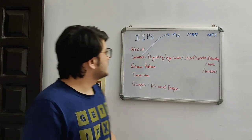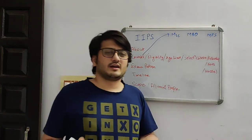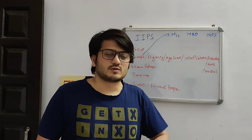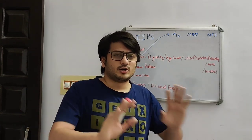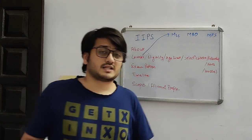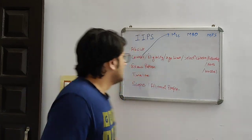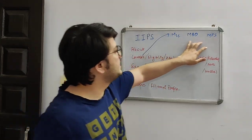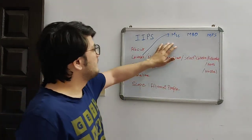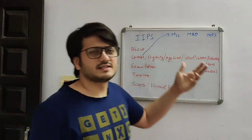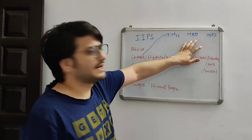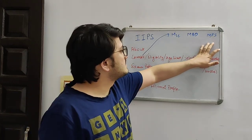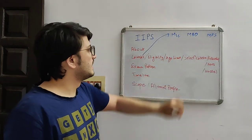At IIPS, there are 6 courses at the postgraduate level — 3 are Master's degree courses and 3 are PhD and doctoral programs. We are going to talk about the Master's degree programs. There are 3 courses: MSc, MBD, and MPS. MSc is Master of Science in Population Studies. MBD is Biostatistics and Demography. And MPS is Master in Population Sciences.